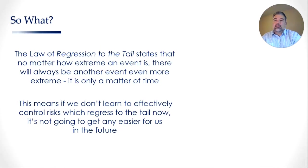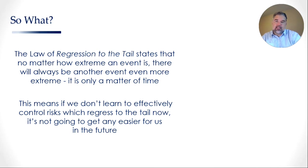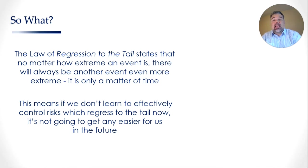By now you're probably saying, so what? Well, the law of regression to the tail tells us that no matter how extreme an event is, there is always going to be another event even more extreme — it's actually only a matter of time. So this means if we don't learn to effectively control risks which regress to the tail now, it's not going to get any easier for us in the future.